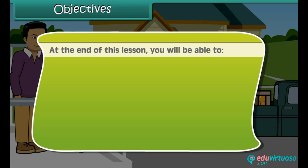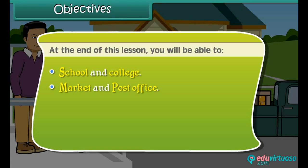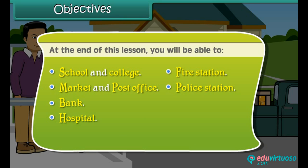At the end of this lesson, you'll be able to know about neighborhood places such as school and college, market and post office, bank, hospital, fire station, police station, railway station, and bus stand.